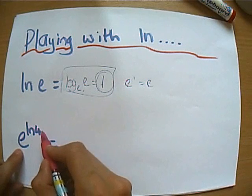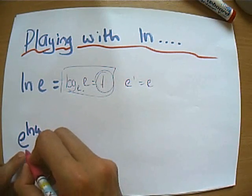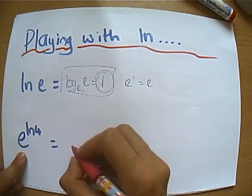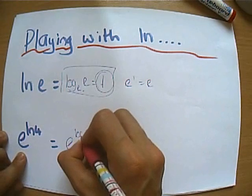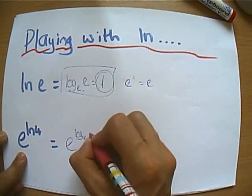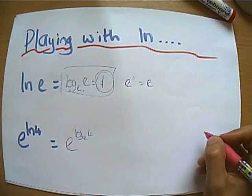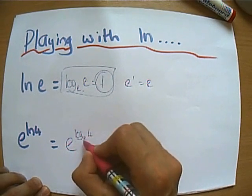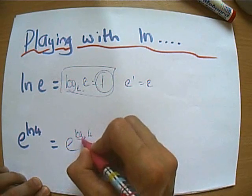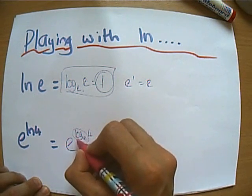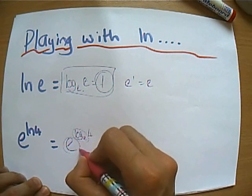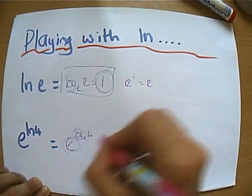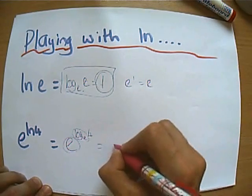So let's think about that. What if we were given this example, e to the power of ln 4? Well, let's sort of expand this and think about it a bit more. e to the power of the power that I raise e by to get 4. So let's think this through. e to the power of the power that I raise e by to get 4. I don't know if you can see, but basically this bit kind of cancels this bit out.